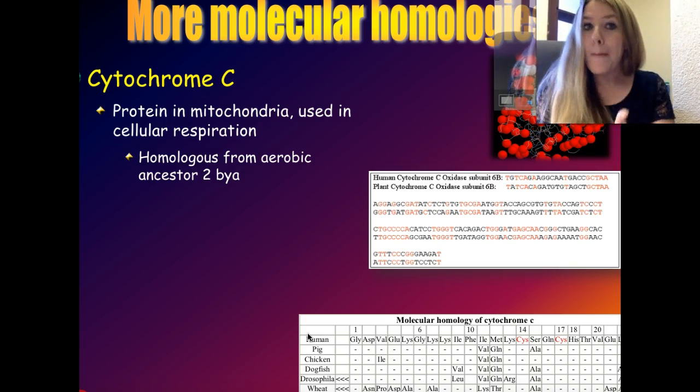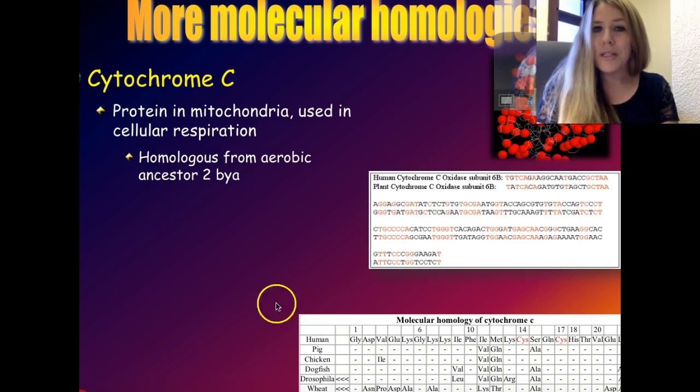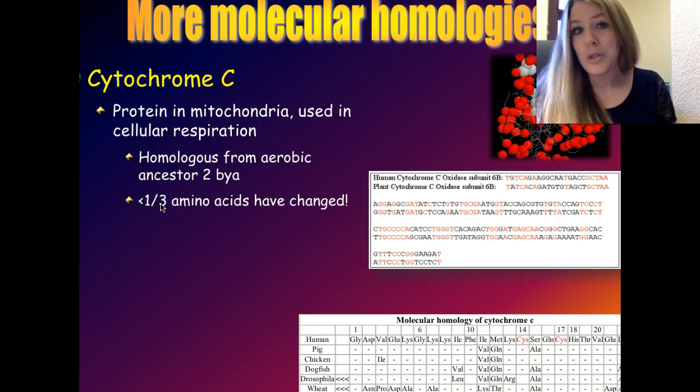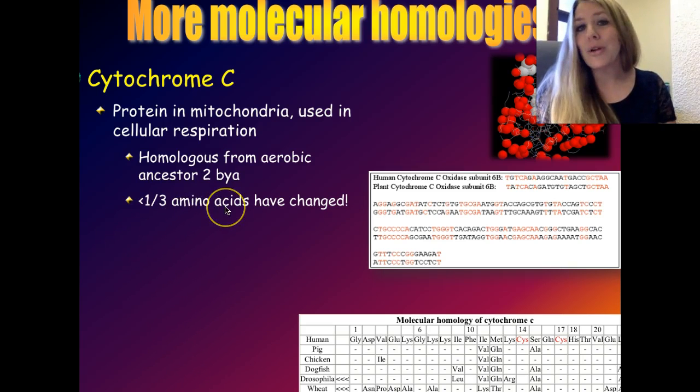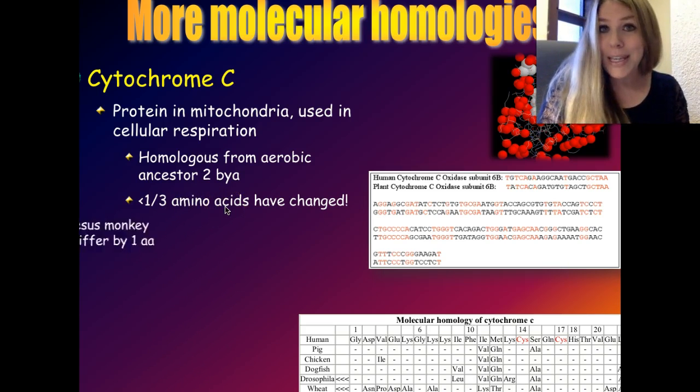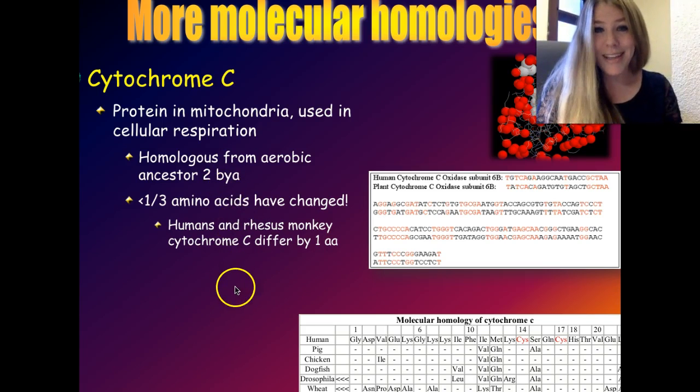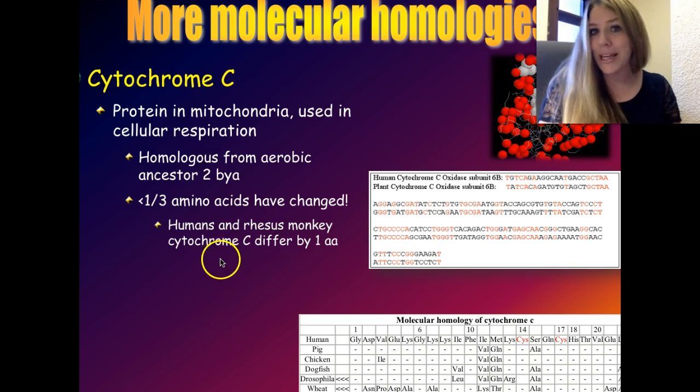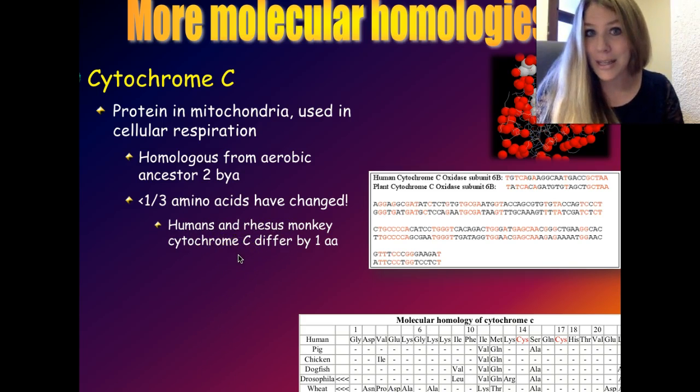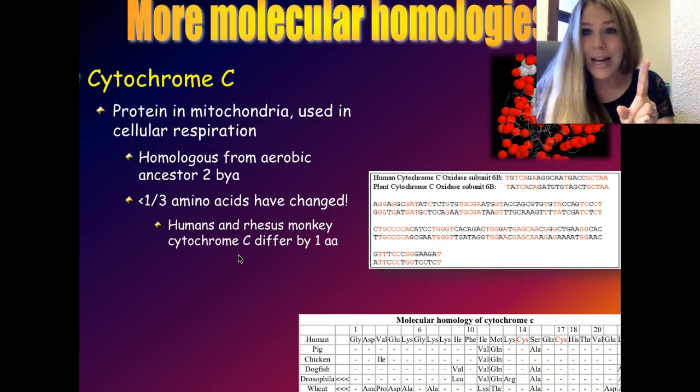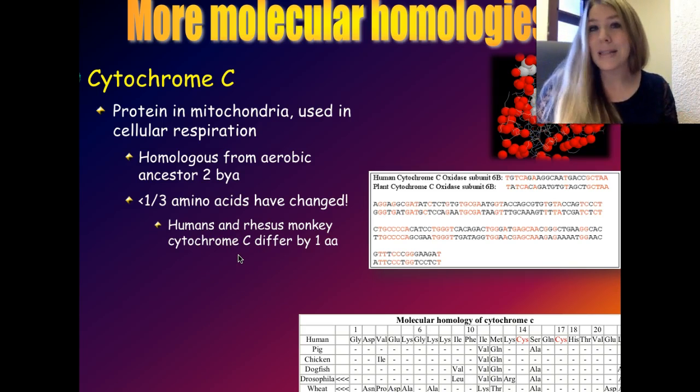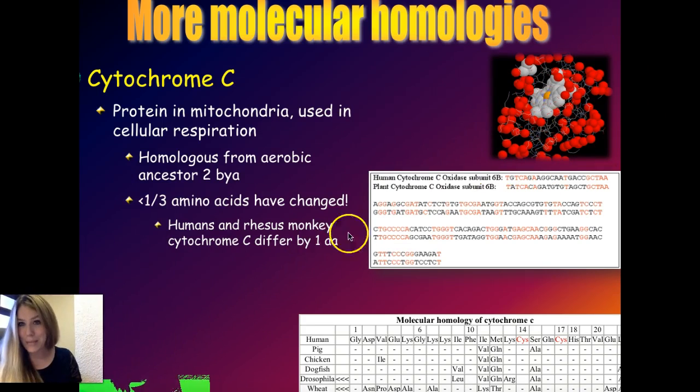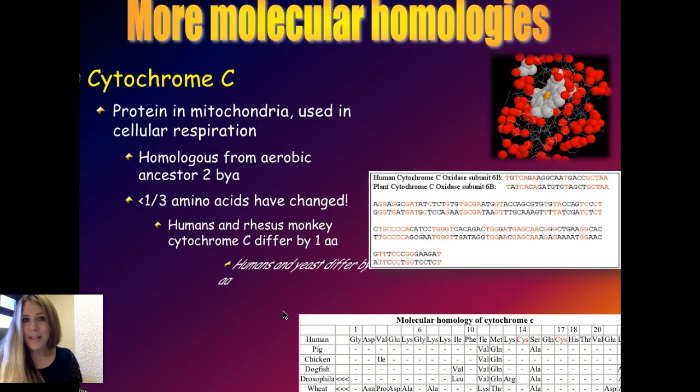So that's evidence for macroevolution, the fact that some proteins are so highly conserved at the molecular level. That's called a molecular homology. These things were homologous from some kind of aerobic ancestor that evolved about 2 million years ago. So less than a third of the amino acids for cytochrome C have changed in 2 billion years. That's crazy.